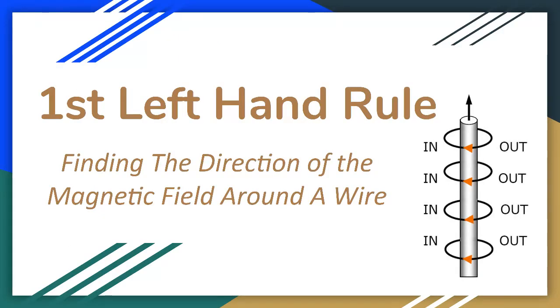Physicists use the north pole of a compass to determine the direction of the magnetic field. So if a compass is placed in front of a wire with current and the north pole points to the left, then we know the direction of the magnetic field in that location.